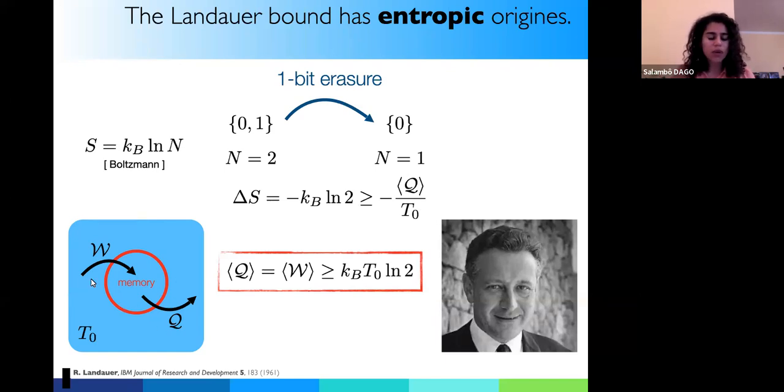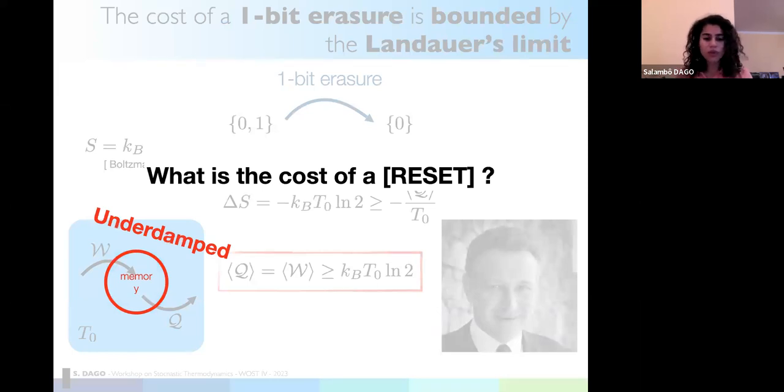And this entropic loss, KB log of two, because you divide by two the number of states available by the system, will bound the average heat required to erase. So in the end, when I erase, my memory will need some work to proceed with the operation and will release some heat in the surrounding environment. As I'm doing cycles, the memory state is the same in the initial and final state. I mean, the potential, not the memory state, the potential. Therefore, I will have on average, the heat equal to the work. And this will be bounded by the entropic loss, KB log of two, T being the temperature of the surrounding environment. This inequality can be saturated when I proceed very slowly in a quasi-static regime. So this is for the theory. Now let's see how we can compute the cost of the erasure, the reset operation for an underdamped memory.